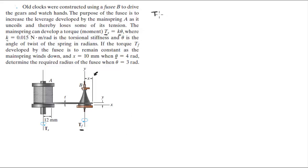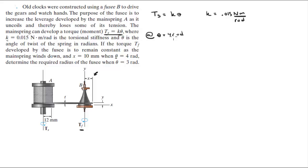Here's how I'll tackle this problem. You know that Ts = k·θ, and the constant k = 0.015 N·m/rad. At θ = 4 radians, Ts = 0.015 × 4 = 0.06 Newton-meters.